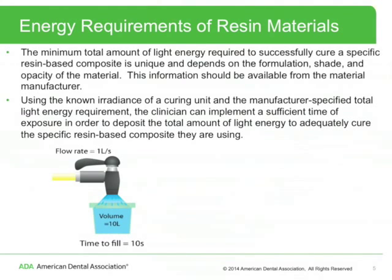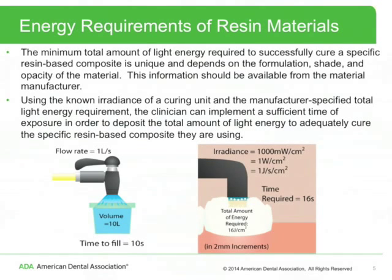Using the hose and bucket analogy, if water flows from the nozzle at one liter per second and the bucket volume is 10 liters, it will take 10 seconds to fill the bucket. Similarly, if the irradiance of a curing unit is 1,000 milliwatts per square centimeter — which is the same as 1 joule per second per square centimeter — and the minimum total light energy required to adequately cure the restorative material is 16 joules per square centimeter, then to adequately cure a 2 millimeter thick increment it takes a minimum of 16 seconds.